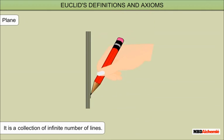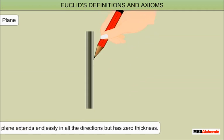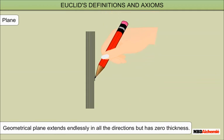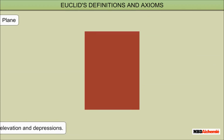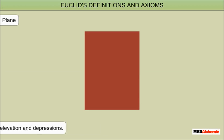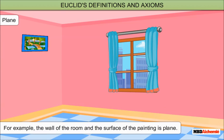Plane: A perfectly flat surface is called a plane. It is a collection of an infinite number of lines. A geometrical plane extends endlessly in all directions but has zero thickness. A plane has no elevation or depressions. For example, the wall of a room and the surface of a painting are examples of a plane.